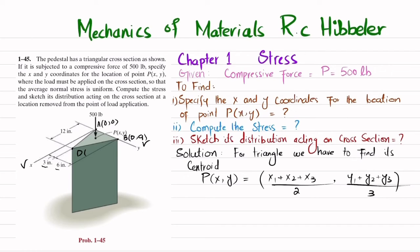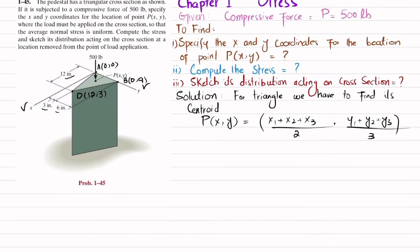And let this point be point number C, where the x coordinate is 12. You can see here the x coordinate is 12 and the y coordinate is 3. On the y-axis this distance is 3, so this will be (12, 3). Now you can find its x coordinate.